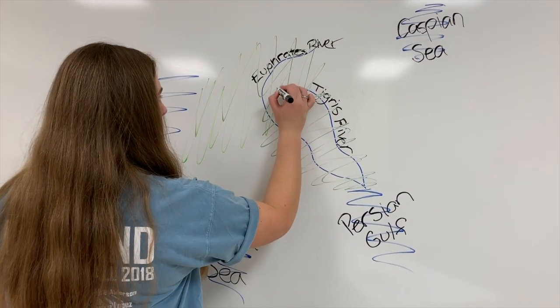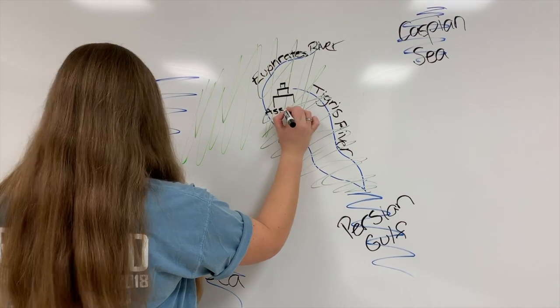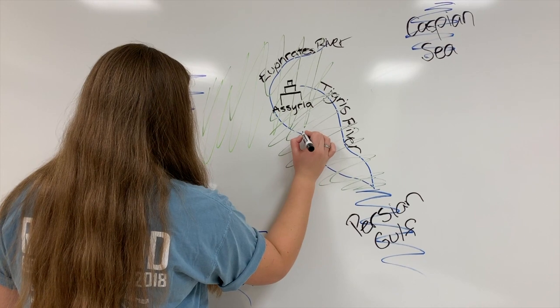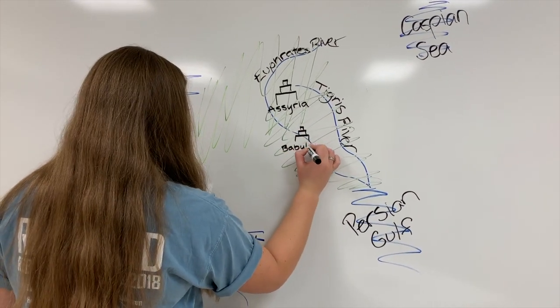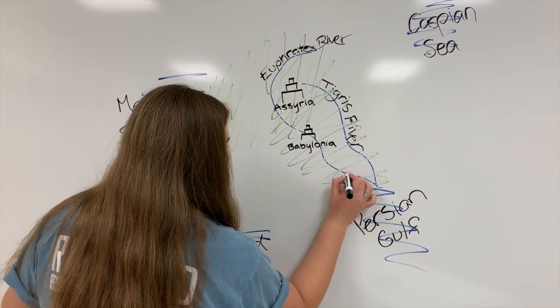Rather than having one king rule this vast section of land, there was one king ruling city-states along the river. For example, the city of Babylon was ruled by Hammurabi, the city of Sumer was ruled by Sargon, and the city of Assyria was ruled by Tiglath-Pileser.